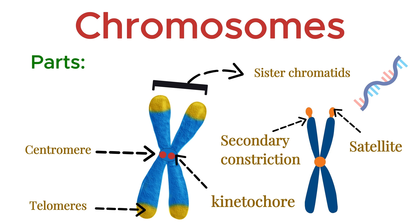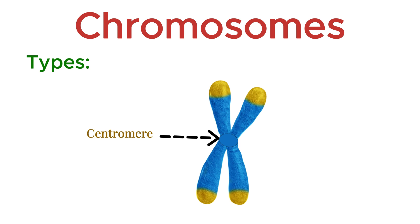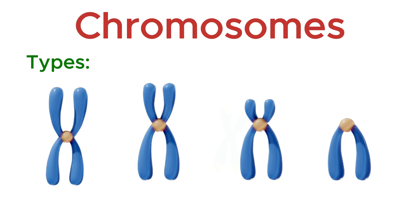These are the major parts of a chromosome. Based on the position of the centromere, chromosomes are divided into four types. First, we have the metacentric chromosome. In this type, the centromere is located exactly in the middle, resulting in two arms of equal length — the P-arm and the Q-arm are almost the same size.